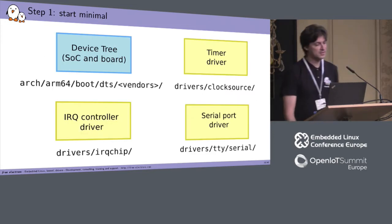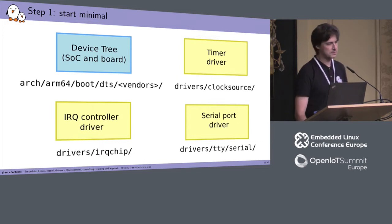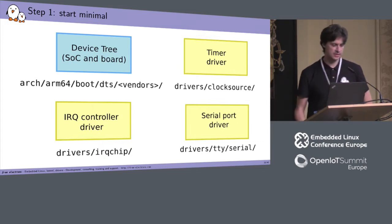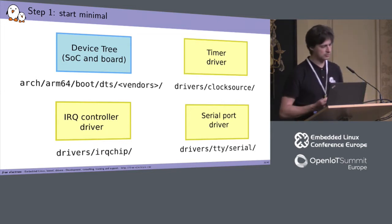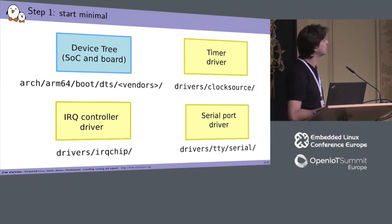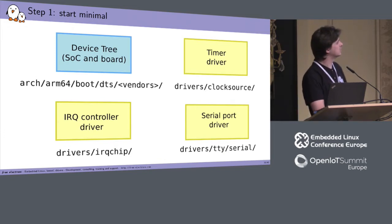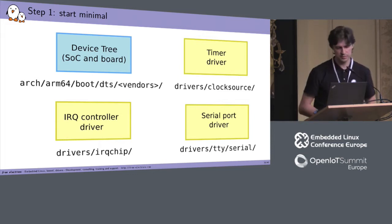The first step is to start minimal. For ARM64, it's pretty straightforward — there is not much to do. Most important will be the device tree. Then you will need a timer, an interrupt controller, and of course a UART port. And if you are lucky, maybe you just have to do this one.